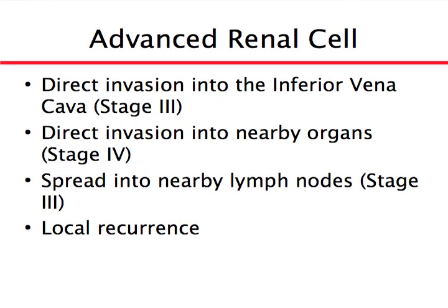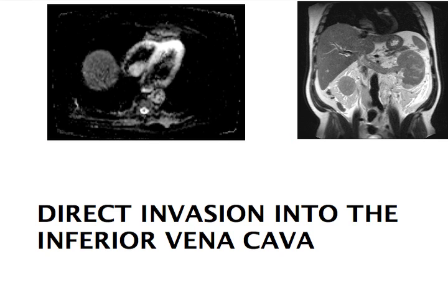To define advanced kidney cancer: one way is if you have direct invasion of the cancer into the inferior vena cava — the big vein that drains blood back into the heart — which occurs in about 10% of patients. Another entity is invasion from the kidney into nearby organs such as the adrenal gland, colon, or pancreas, which is considered stage 4. Spread to lymph nodes around the kidney is still considered stage 3, and finally, local recurrence after prior kidney removal.